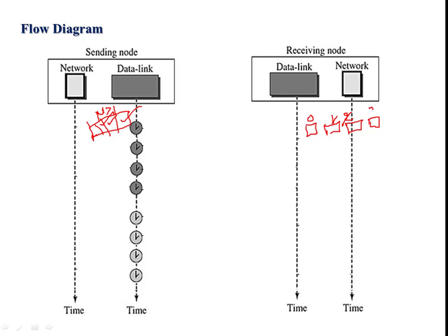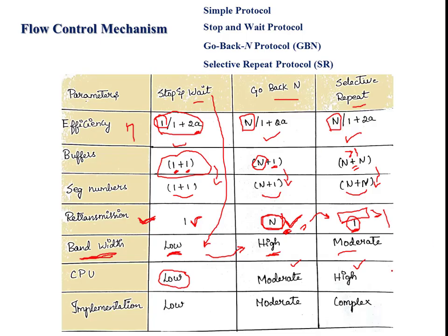Whereas in selective repeat, there is no need to follow a strict order — packets zero, one, two, three can arrive in any order. However, after receiving them, the receiver must arrange the packets back into the correct sequence. Because the ordering is not maintained on arrival and arrangement must be done later, the programming complexity is higher than in go-back-N, making CPU requirements high.